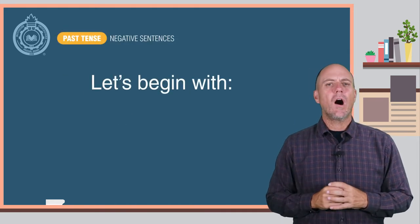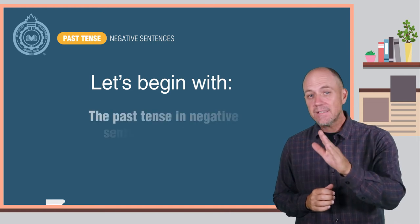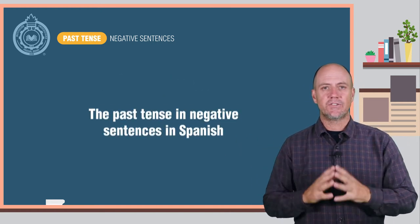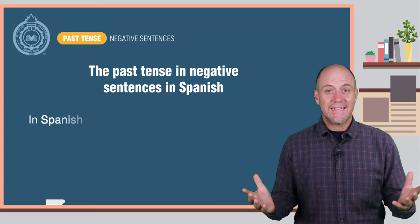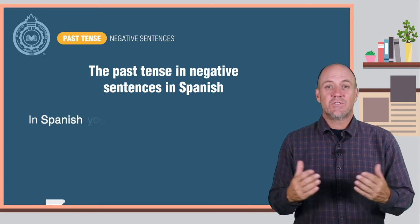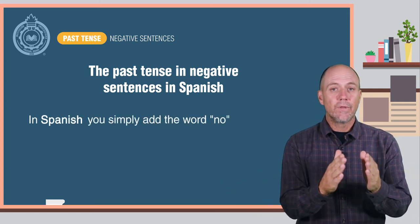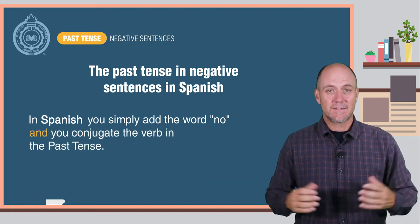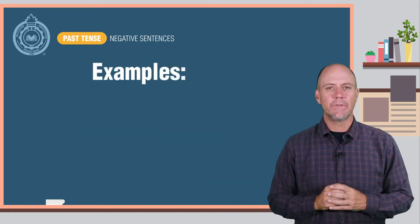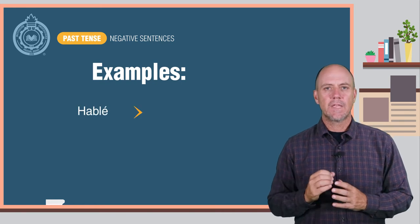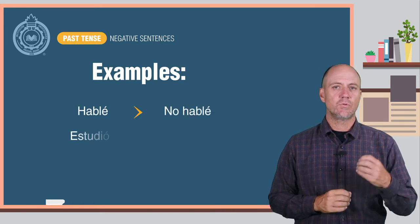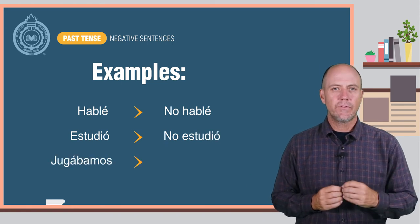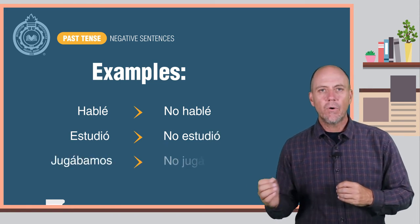Let's begin with what you already know: the past tense in negative sentences in Spanish. In Spanish it is very easy — you simply add the word 'no' before the verb and you conjugate the verb in the past tense. Here are some examples: hablé, no hablé; estudió, no estudió; jugábamos, no jugábamos.